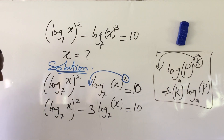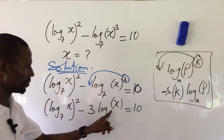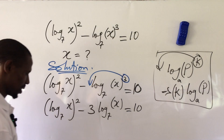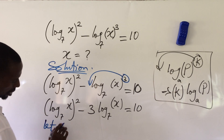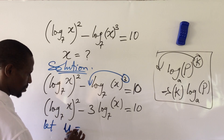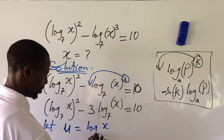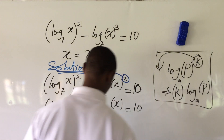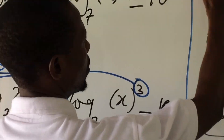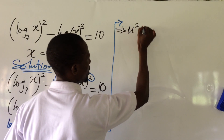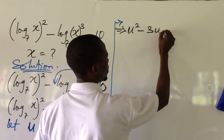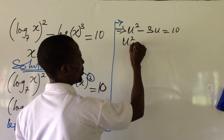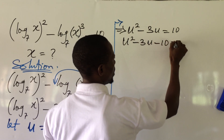We have log_x(7) appearing twice. At this point we bring in another variable to represent log_x(7). Let u equal log_x(7). Substituting wherever we see log_x(7), this now implies u² minus 3u equal to 10. Moving 10 to the other side gives us u² minus 3u minus 10 equal to 0.